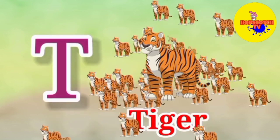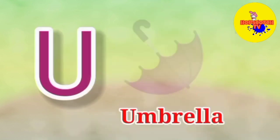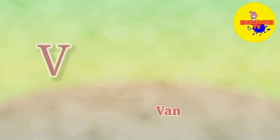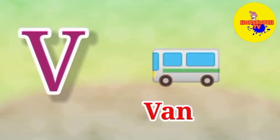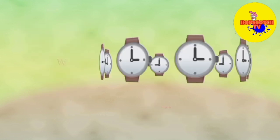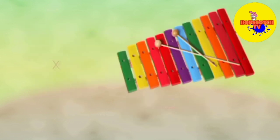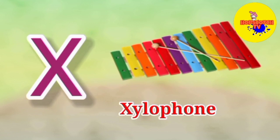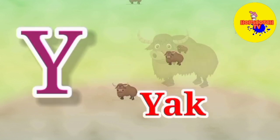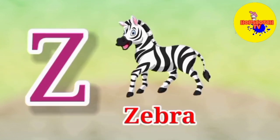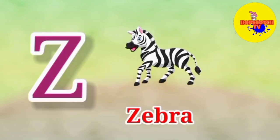T for Tiger. U for Umbrella. V for Van. W for Watch. X for Xylophone. Y for Yak. Z for Zebra.